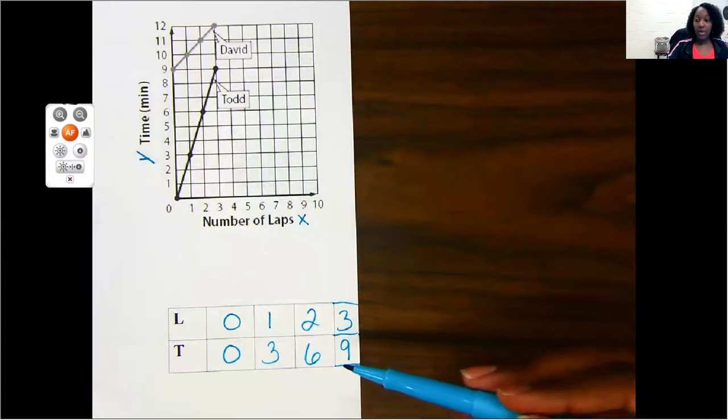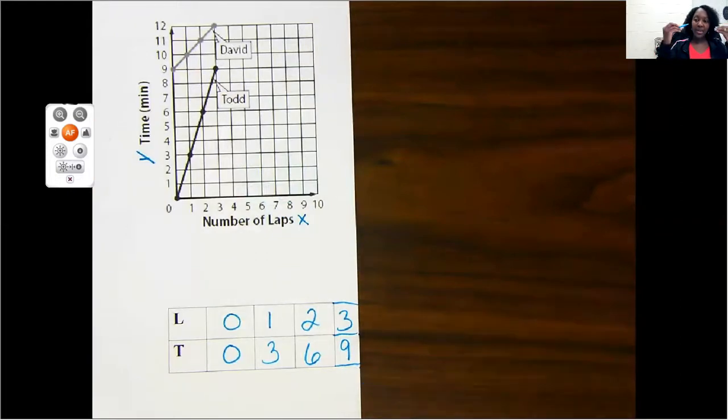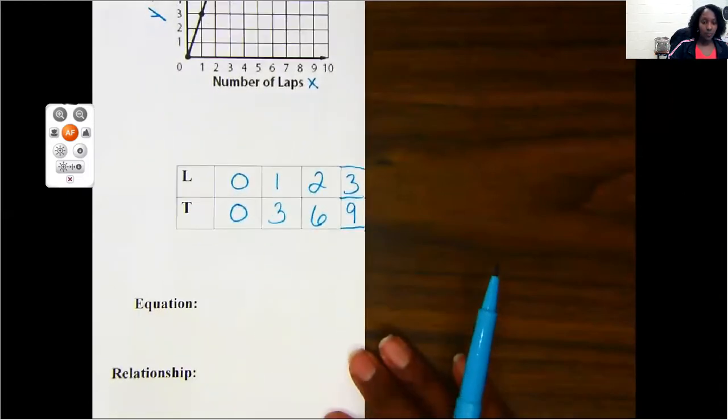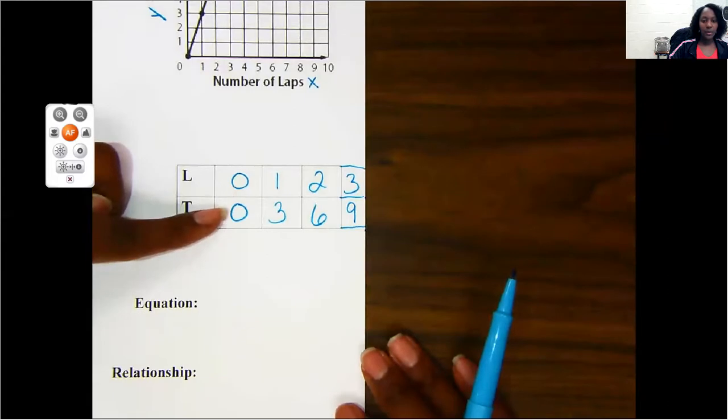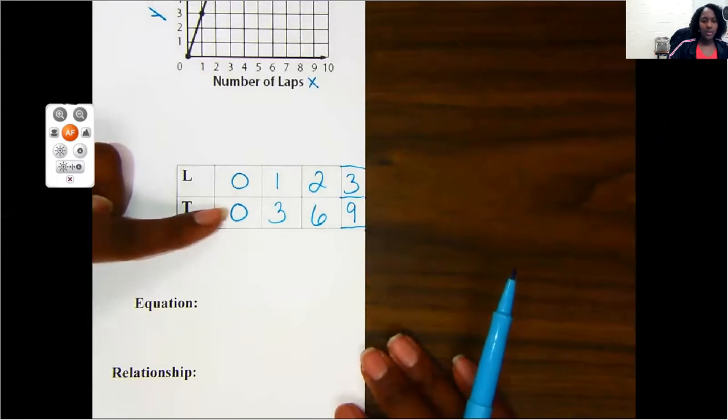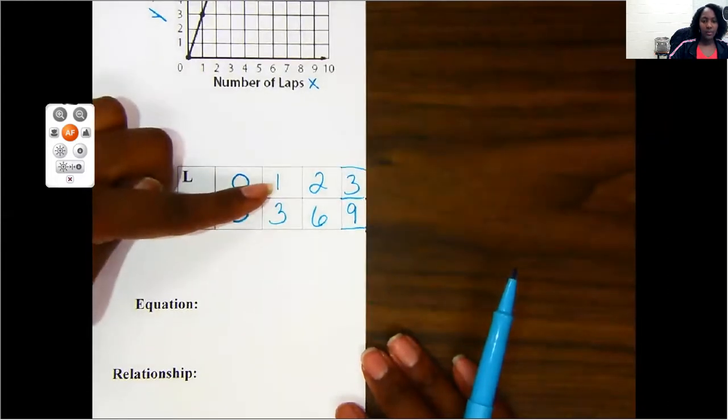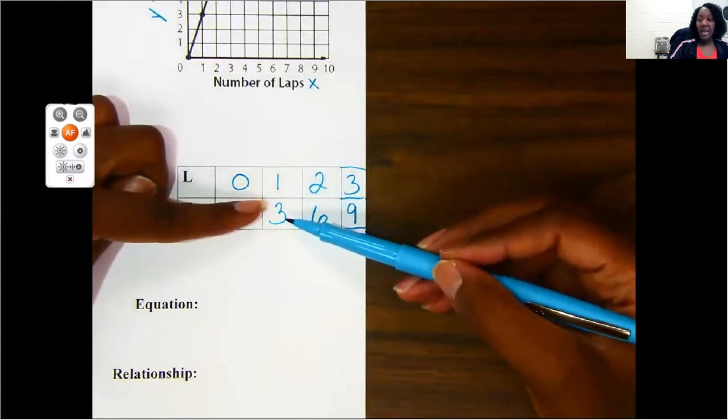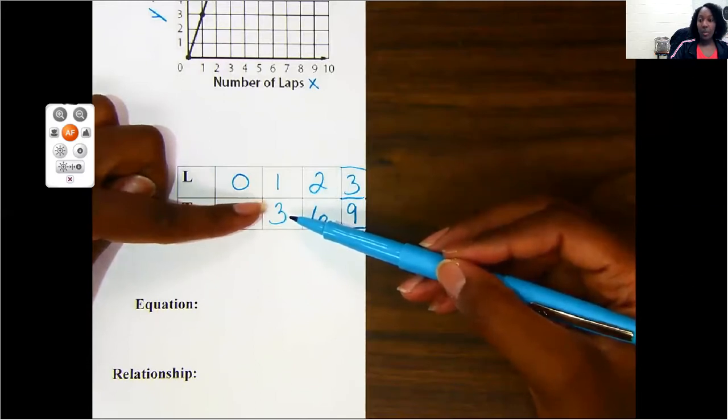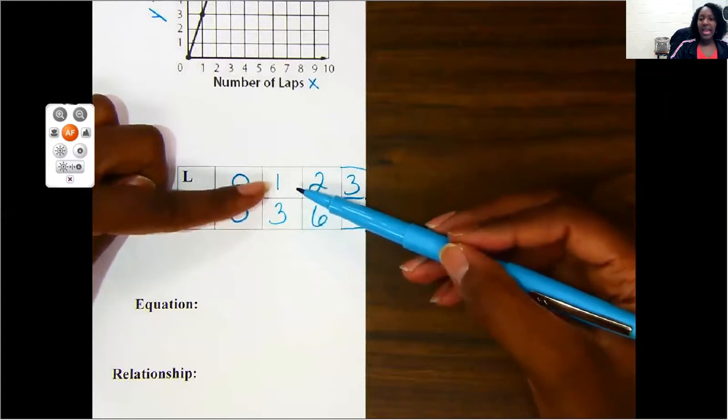Remember, when you're looking for your equation from a table or graph, you're trying to say what is happening to my x to get my y. Okay, so let's look at our table, x, y. Well, since I have zero, zero for my first pair, I'm going to move on to the second pair to see where I can find a relationship. So my x to my y, I went up, my numbers went up. If my numbers are going up, that means I either multiplied by something or I added something. So let's say we added something. What can I add to one to get a three?